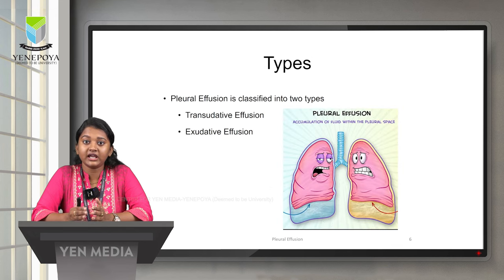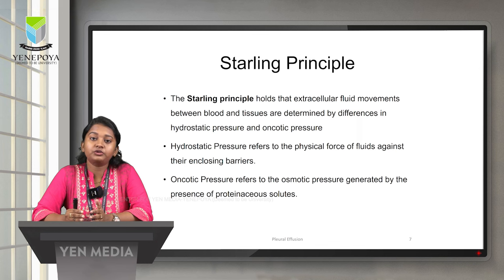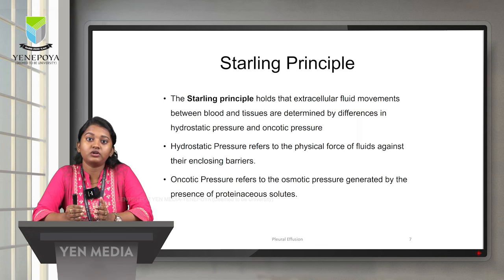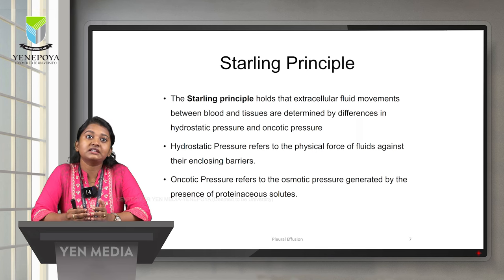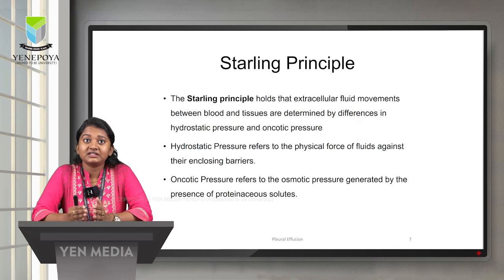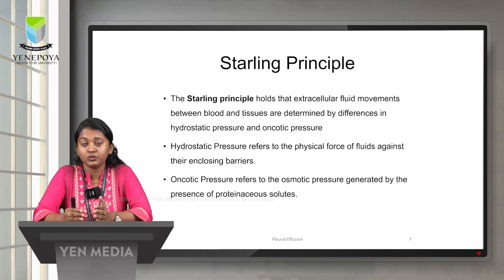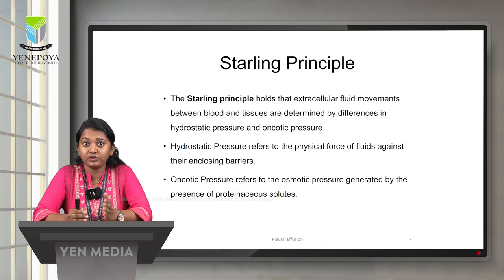There are two types of pleural effusion: transudative effusion and exudative effusion. Before going into what each type is, we have to know the Starling principle. The Starling principle holds that extracellular fluid movement between blood and tissue is determined by the difference in two forces — hydrostatic pressure and oncotic pressure.